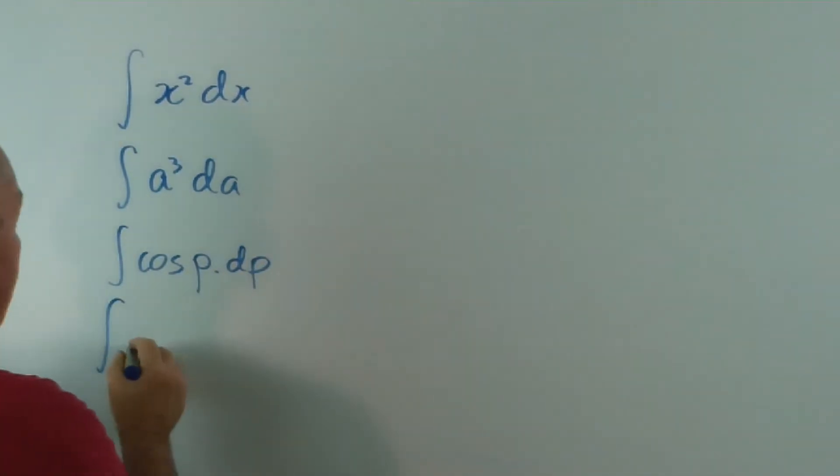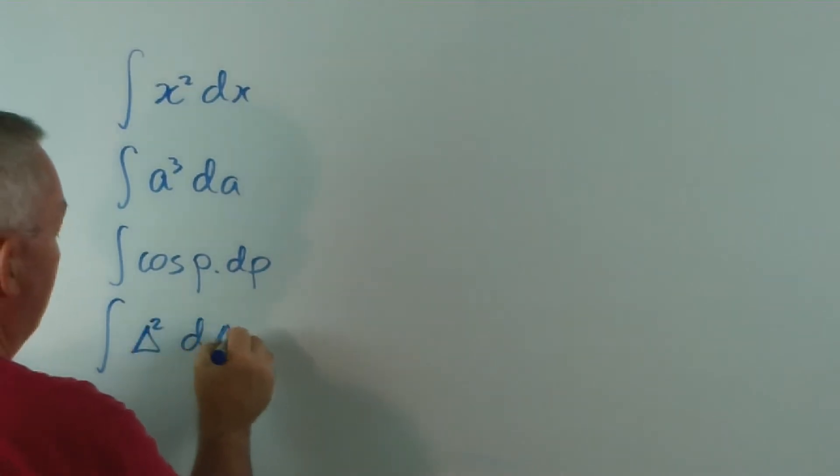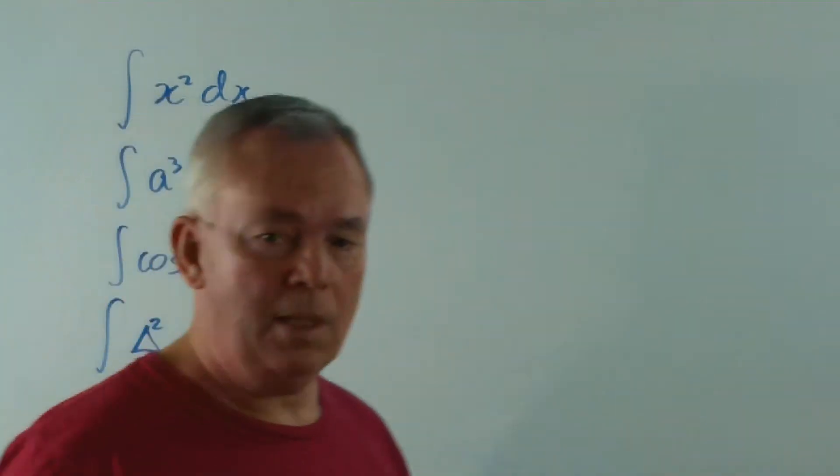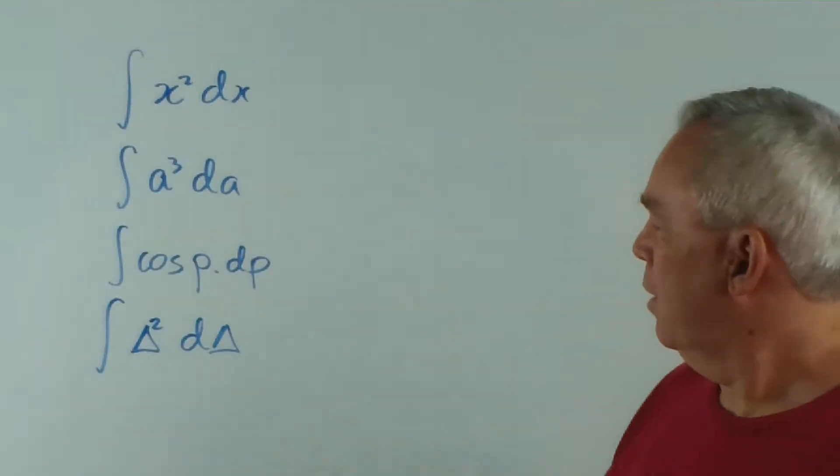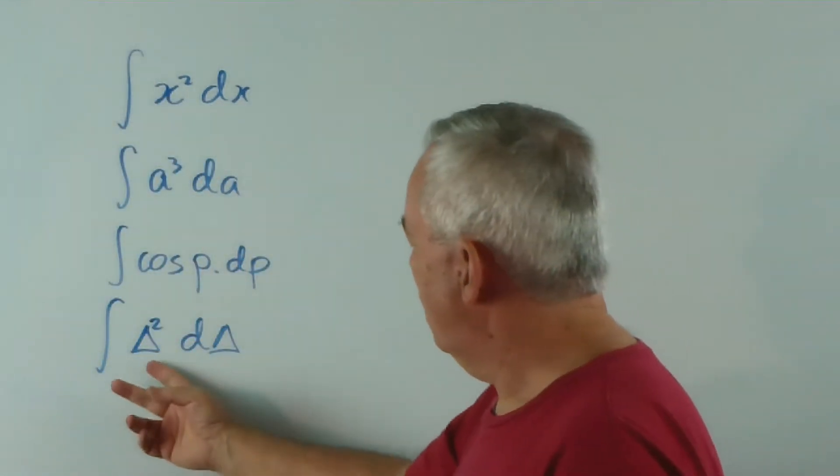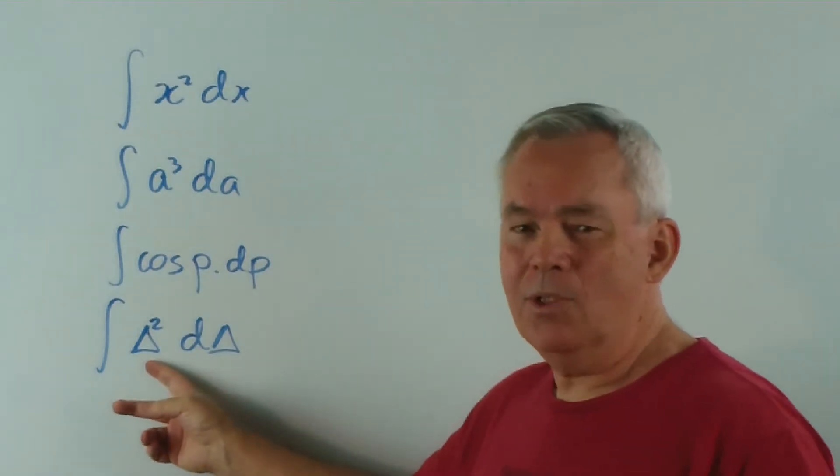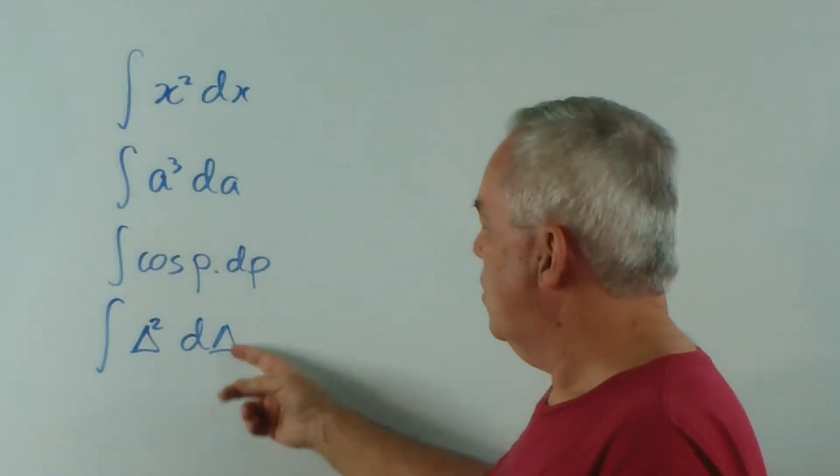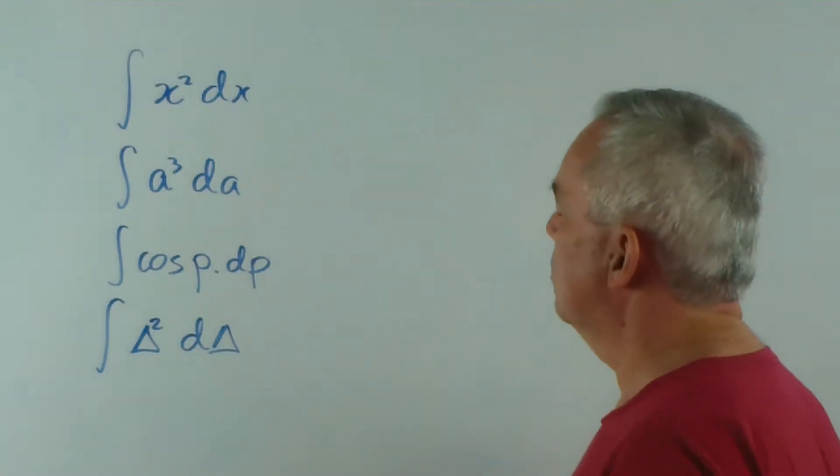Technically, you could even integrate with symbols, if you wanted. All these... they stand in place of numerals. They're called pro-numerals. They're just symbols that stand in place of numbers.